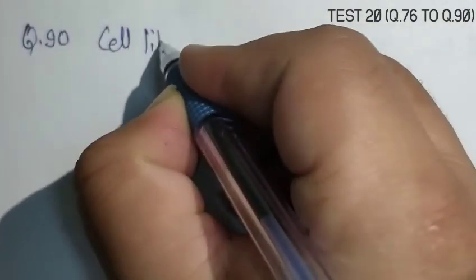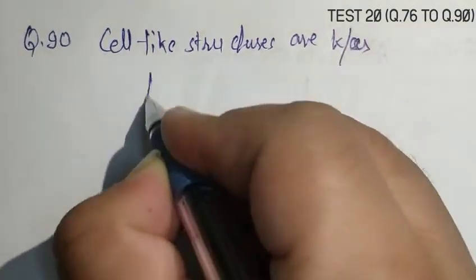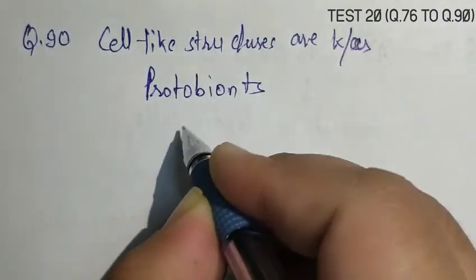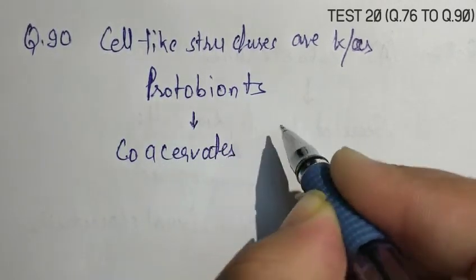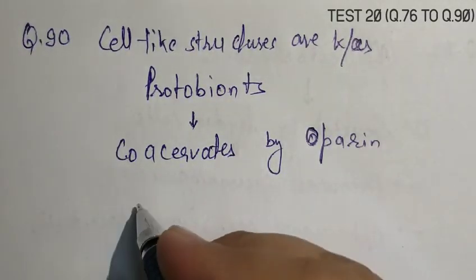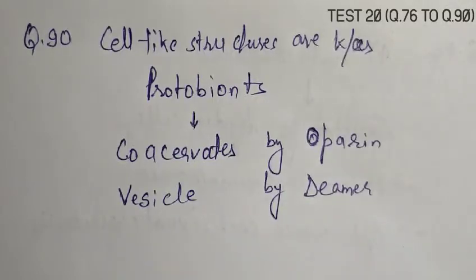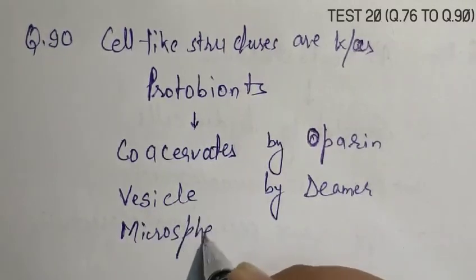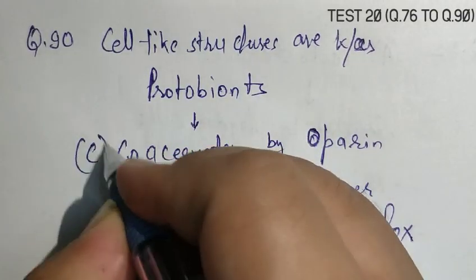Question number 90. Under certain conditions scientists have obtained cell-like structures. These are known as. The cell-like structures are known as protobionts. And the various protobionts obtained by the different scientists are coacervates. So, the correct answer is C. Coacervates.